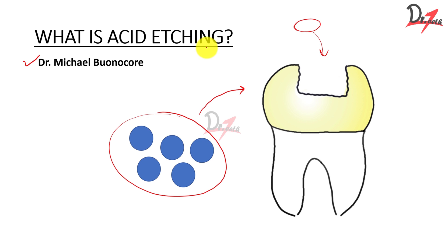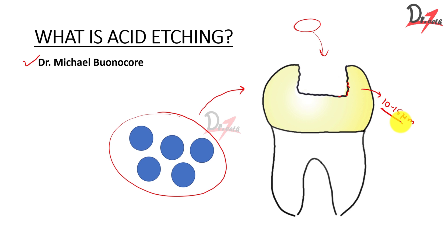That is acid etching — we do it because we want a good bond between the restorative material and the tooth surface. These undercuts range from 10 to 15 micrometers in depth. This highly irregular and tortuous surface will hold the composite resin in place.